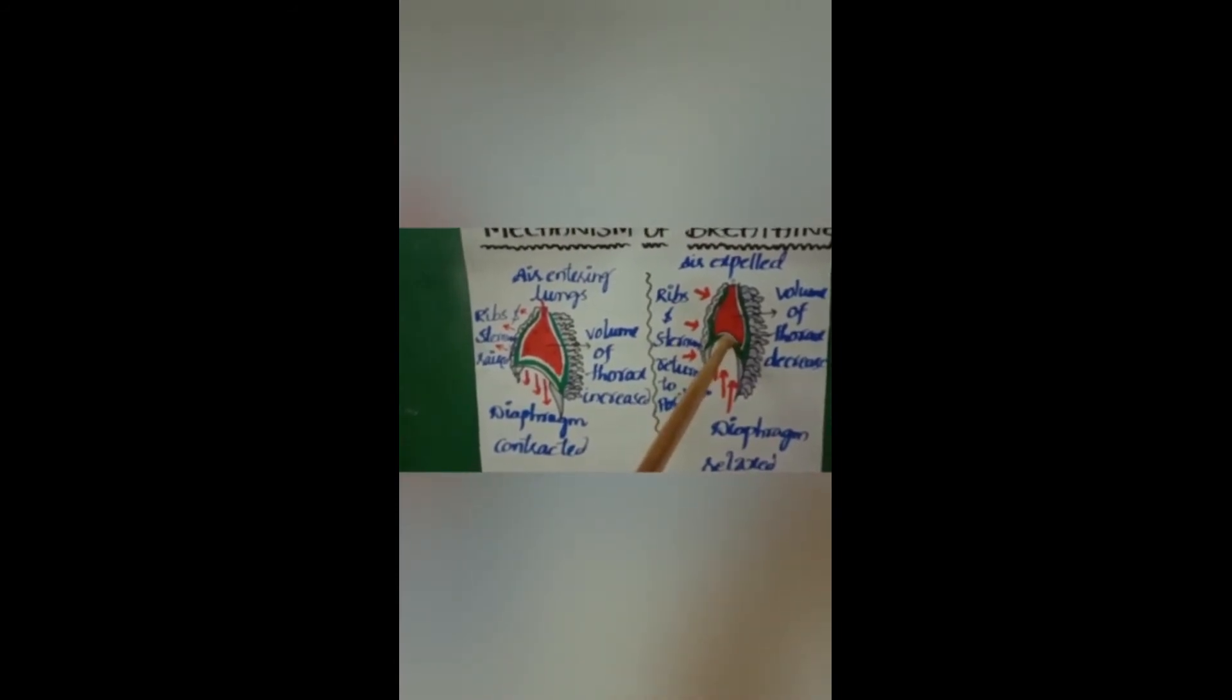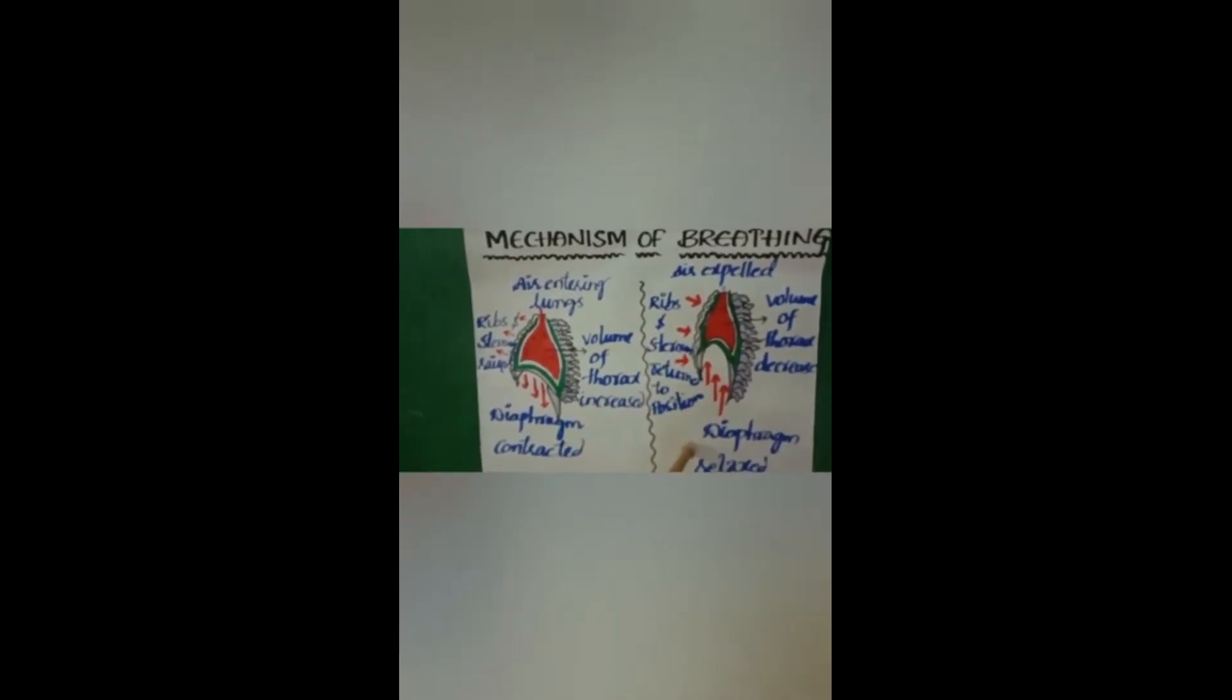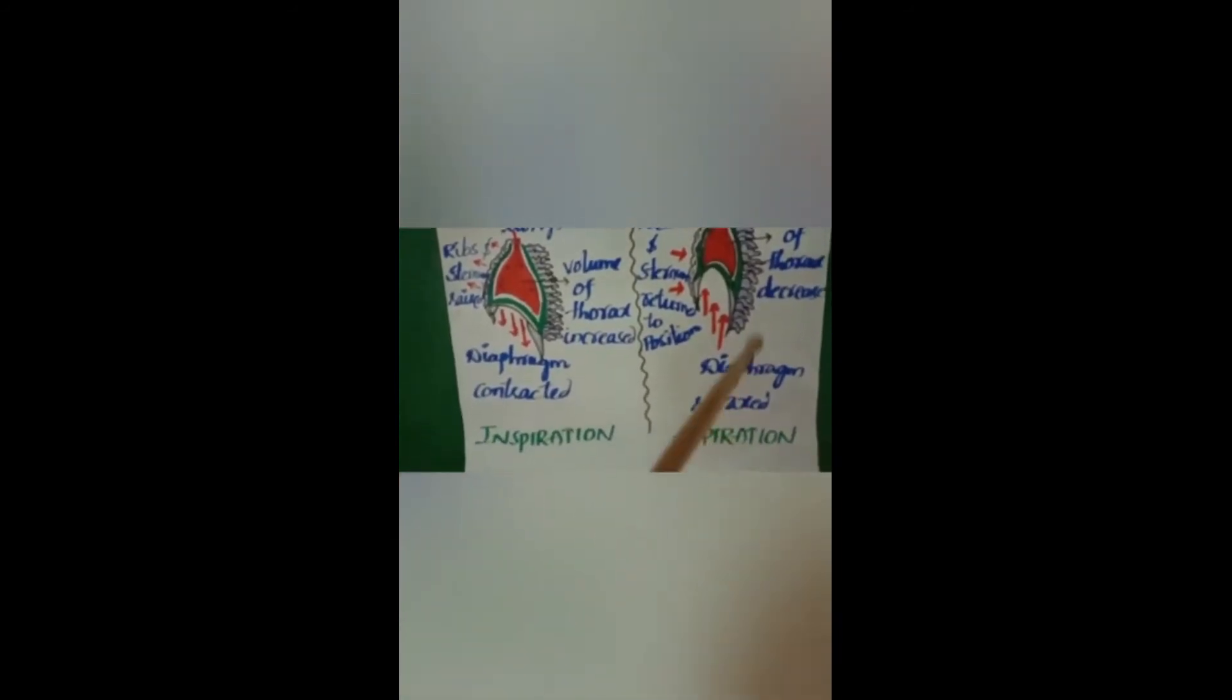In expiration, diaphragm will be relaxed. You can see that lungs are pushing out gases. Gases are going out. Carbon dioxide is a major gas which is released. At the same time, ribs and sternum return to position. The process is called expiration. Volume of the thoracic cavity will be decreased. This is mechanism of breathing.